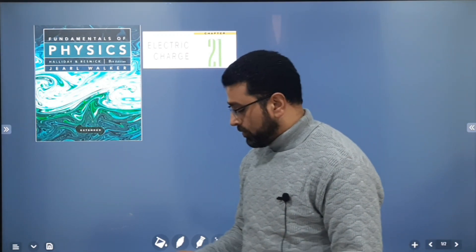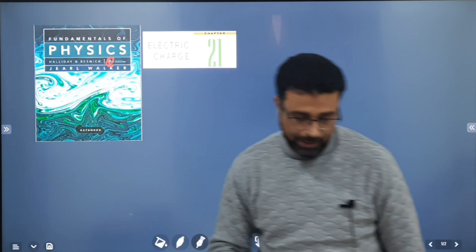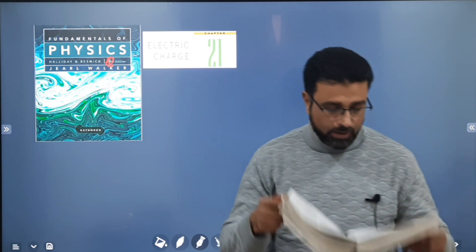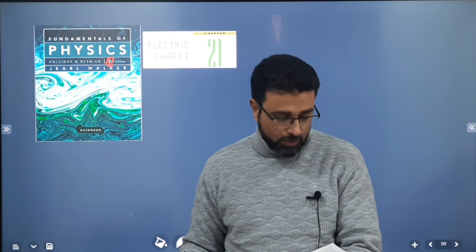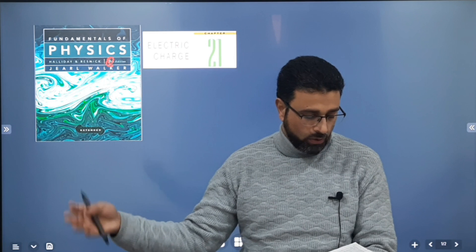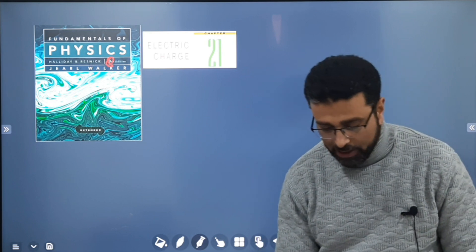We are continuing solving problems from Halliday Resnick-Walker, 8th edition. We are doing Coulomb's Law, Chapter 21, problem number 17. The charges and coordinates of two charged particles held fixed in an xy plane are given as q1, x1, y1 and q2, x2, y2. Find the magnitude and direction of the electrostatic force on particle 2 due to particle 1. At what x and y coordinates should a third particle of charge q3 equal to plus 4 microcoulombs be placed such that the net force on particle 2 due to particles 1 and 3 is zero?